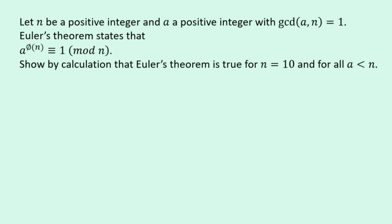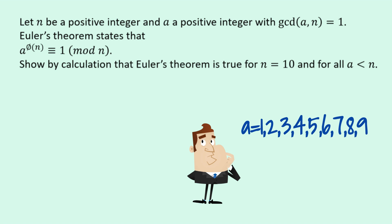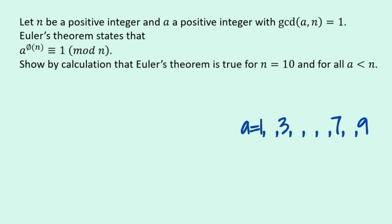So we're told that n equals 10, and we're going to consider all the numbers a that are less than 10. We need to consider all the a's, the numbers less than 10, that are positive integers and have a GCD with the number 10 equal to 1. So the numbers that satisfy all those conditions are 1, 3, 7, and 9. So because there are four of these numbers, we know that phi of n is equal to 4.